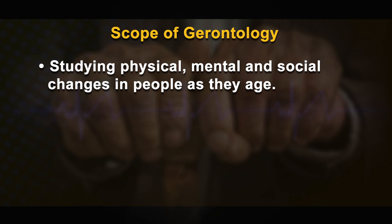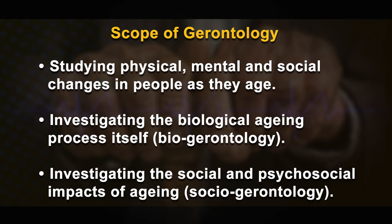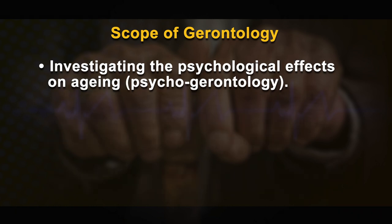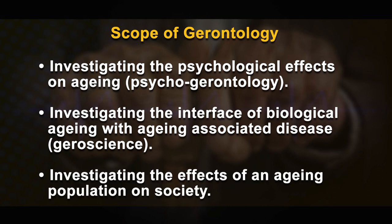Recently, gerontology and geriatrics, with subclassifications of different subsidiary branches, have been recognized. These two branches deal with two different aspects of human life and are both equally important. Gerontology is distinguished from geriatrics, which is the branch of medicine that specializes in the treatment of existing disease in older adults. The scope of gerontology includes studying physical, mental, and social changes in people as they age; investigating the biological aging process itself — biogerontology; investigating social and psychosocial impacts of aging — social gerontology; investigating psychological effects on aging — psychogerontology; investigating the interface of biological aging with aging-associated diseases — geroscience; and investigating the effects of an aging population on society.